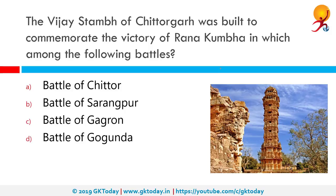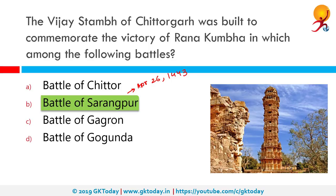The Vijay Stambha of Chittorgarh was built to commemorate the victory of Rana Kumbha in which battle? The correct answer is the Battle of Sarangpur, which happened on 26th April 1443 between Rana Kumbha and the sultan of that time. Following an indecisive battle, the sultan returned to Mandu, then attacked again in November 1443, capturing Gagron and adjoining forts, but the capture of Chitor eluded him. The sultan lost in the battles of Mandalgarh and Banas. To commemorate his resounding victory over the combined armies of Malwa and Gujarat in 1440 AD, Rana Kumbha got the famed 37-meter high, 9-storey Vijay Stambha erected in Chittorgarh, completed in 1448 AD.